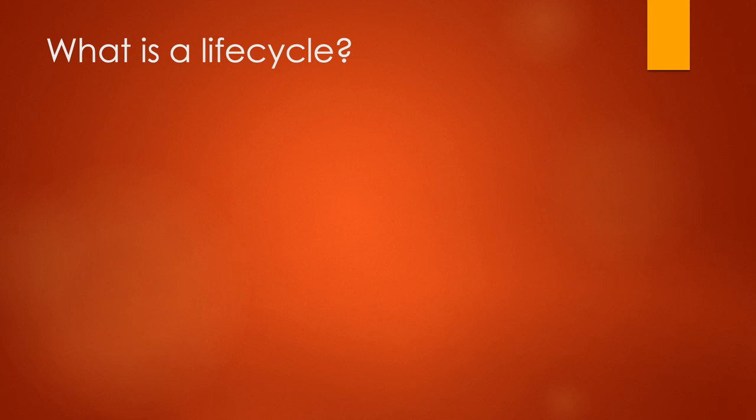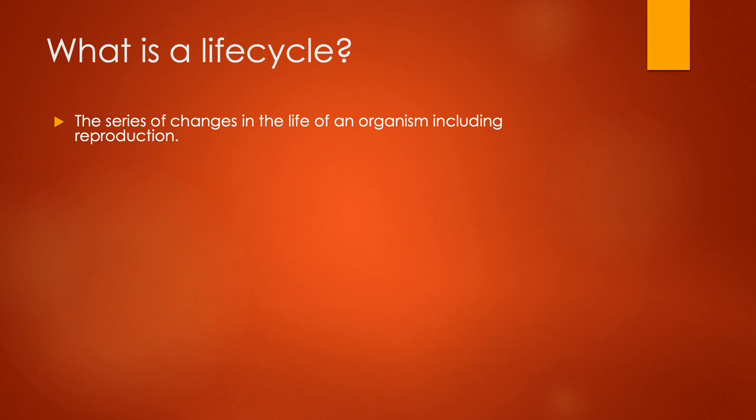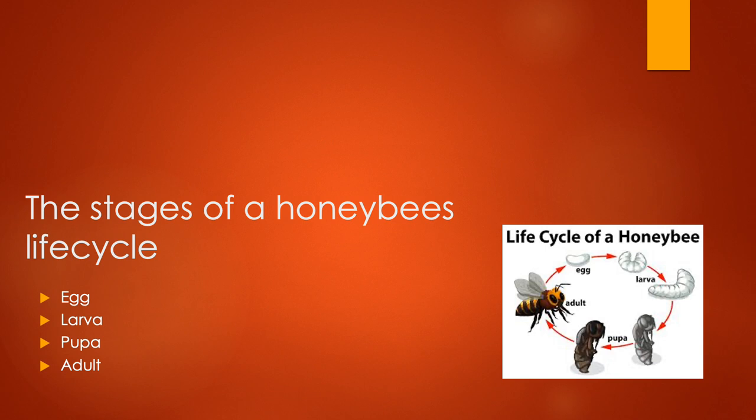What is a life cycle? A life cycle is a series of changes in the life of an organism, including reproduction, and all living things have a life cycle. There are four stages to a honeybee's life cycle, and these are the egg, larva, pupa, and adult.